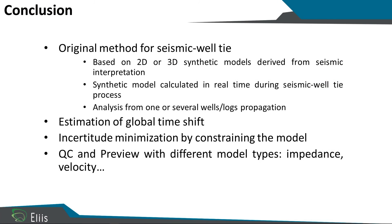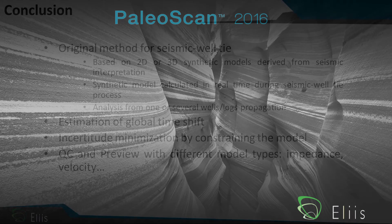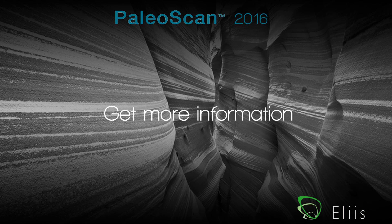As a conclusion, with PaleoScan you have two different types of well tie. You have a local well tie with time shift and stretch and squeeze. Or you have a global method. With the global method, you have an automatic detection of the best time shift, or you can make a comparison between your synthetic model and your seismic model and minimize the error between the two pictures. It's very useful to have a global QC of your well tie. Thank you for your attention and see you on the next video.